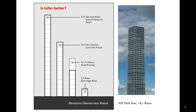Above 7 or 8:1 slenderness, stiffness becomes the critical problem. Steel, though stiffer than timber, is still relatively ductile. For super-slender buildings, we really need the stiffness and mass of concrete to prevent harmonic wind-based oscillations. By the time we reach about 10:1, our structural palette is basically limited to concrete.